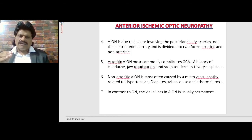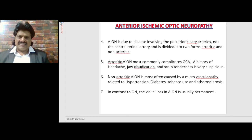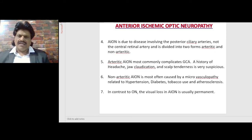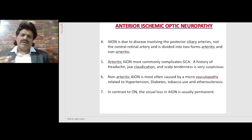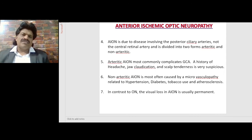Anterior ischemic optic neuropathy is due to disease involving the posterior ciliary arteries, not the central retinal artery, and is divided into two forms: arthritic and non-arthritic. The arthritic form most commonly complicates giant cell arteritis; a history of headache, jaw claudication, and scalp tenderness is very suspicious. The non-arthritic form is most often caused by microangiopathy related to hypertension, diabetes, tobacco use, and atherosclerosis. In contrast to optic neuritis, the visual loss in anterior ischemic optic neuropathy is usually permanent.